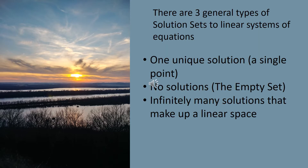There are three general types of solution sets to a linear system of equations. You could have one unique solution, or a single point. If your system is inconsistent and there are no solutions, that is a second option. Sometimes we say that an inconsistent system has the empty set as its solution set. Or you could have infinitely many solutions that make up a linear space.